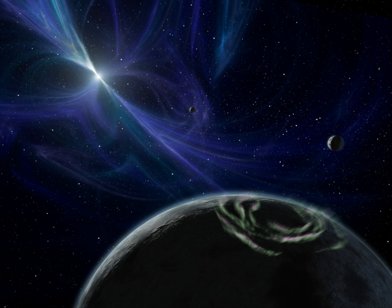Pulsar planets are planets that are found orbiting pulsars, or rapidly rotating neutron stars. The first such planet to be discovered was around a millisecond pulsar and was the first extrasolar planet to be confirmed as discovered.